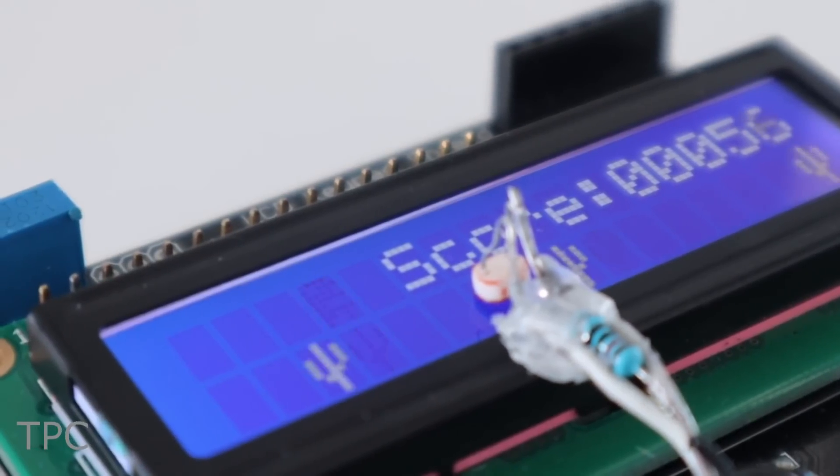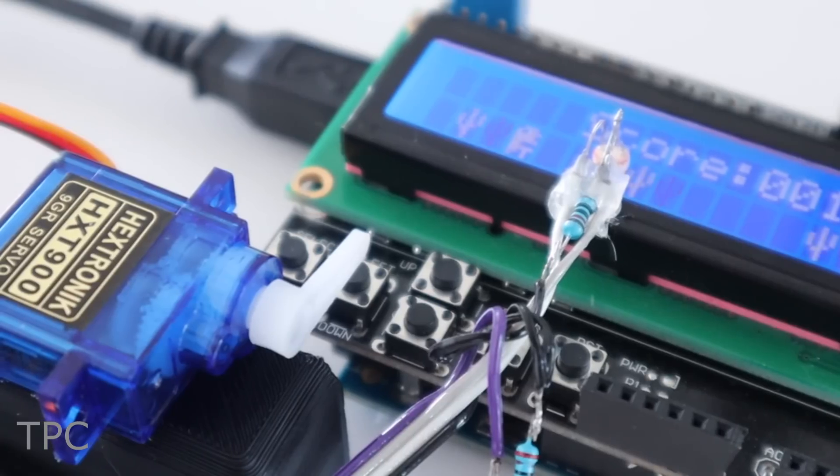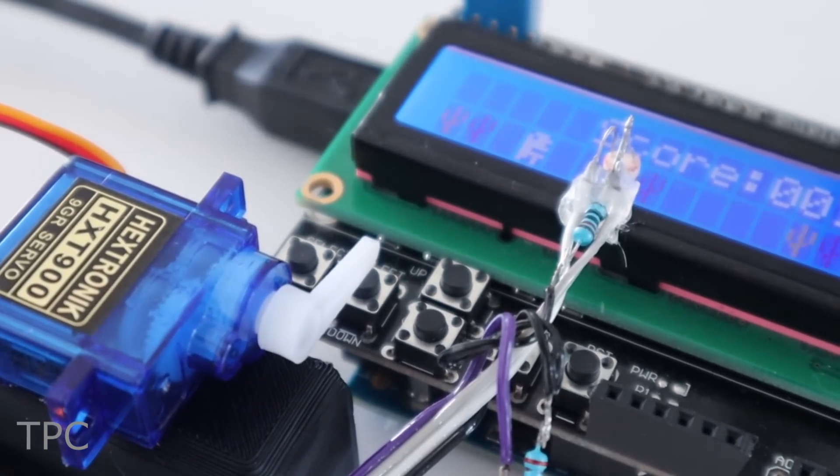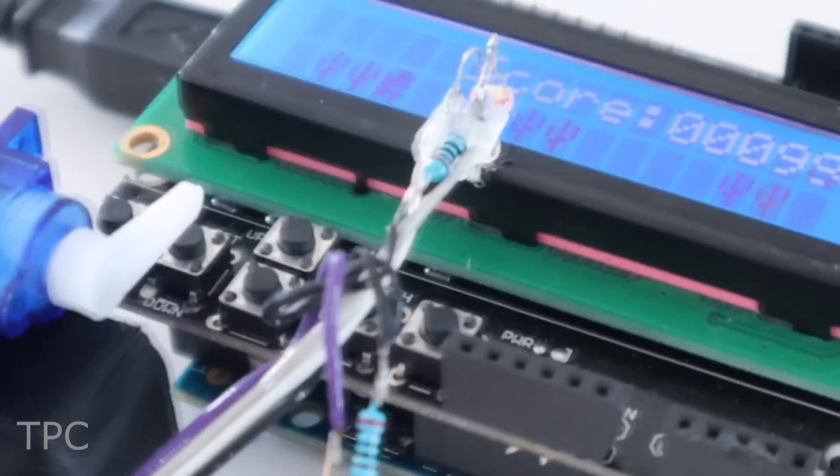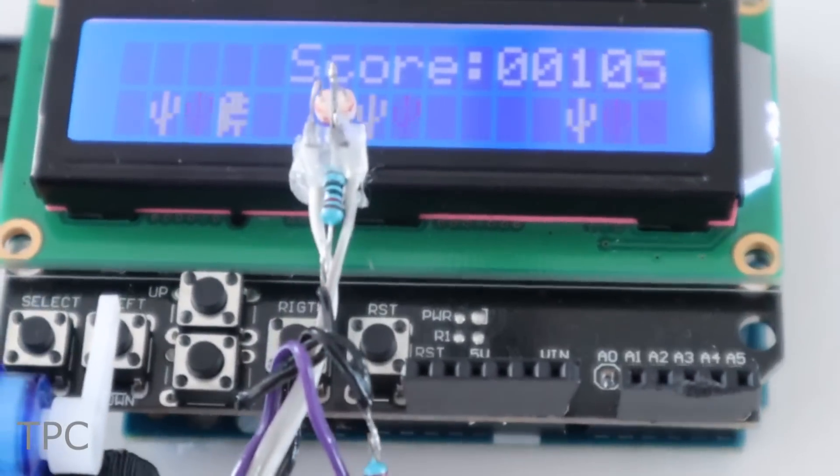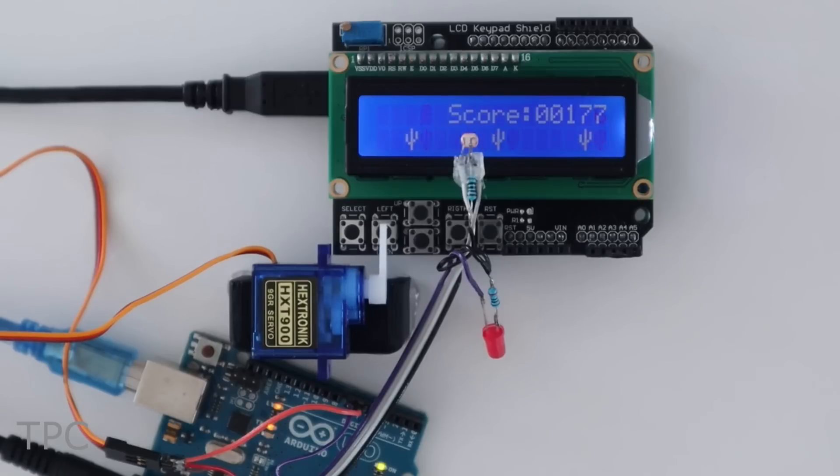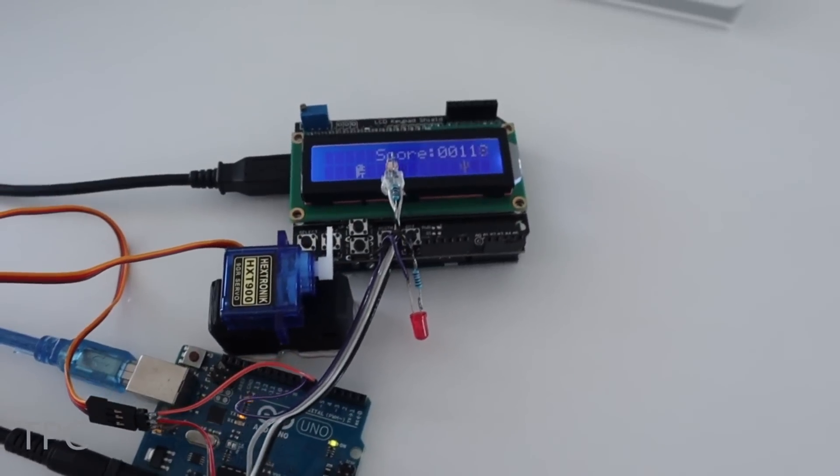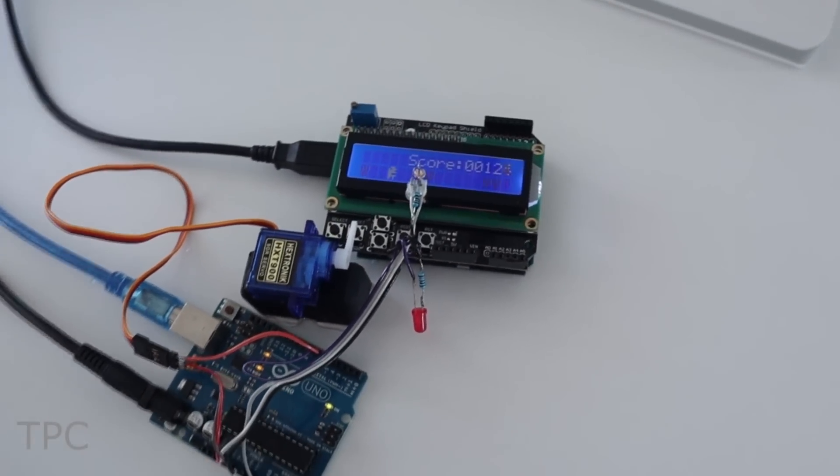The second Arduino uses an LDR to sense each cactus, and then moves a servo to press the button on the first Arduino. This makes the dinosaur jump over each cactus. Cactuses are initially separated by a minimum of five spacers, and this goes down to four as the game progresses. The score is kept based on how long you're able to avoid running into a cactus.